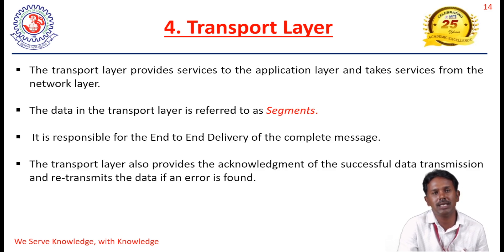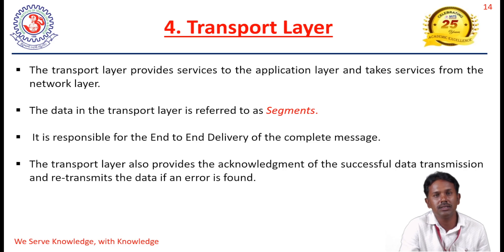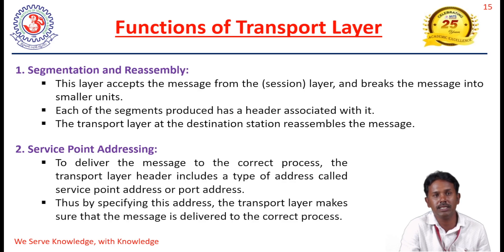The next layer is the transport layer, which takes services from the network layer. The data in the transport layer is called segments. It is responsible for end-to-end delivery of the message. The transport layer provides acknowledgement — if data is successfully received, an acknowledgement is returned and no retransmission is needed. The functions include segmentation and reassembly, and service point addressing. Segmentation breaks the whole message into smaller units, and each segment is associated with a header.